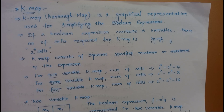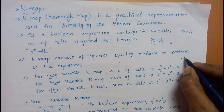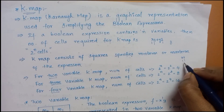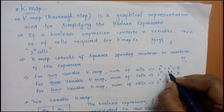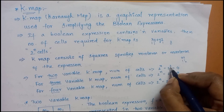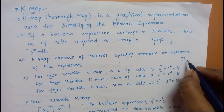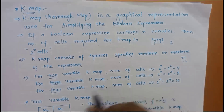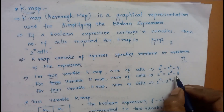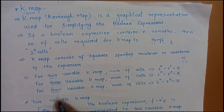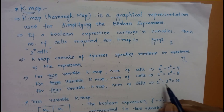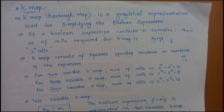For a 2-variable K-map, number of cells required is 2^n equal to 2^2 equal to 4 cells. For 3 variables, 2^3 equals 8 cells. For 4 variables, 2^4 equals 16 cells. For 5-variable K-map, that is different and we will look at it in the next videos.